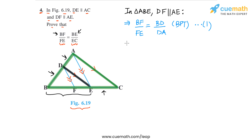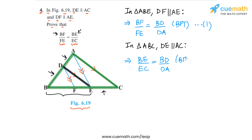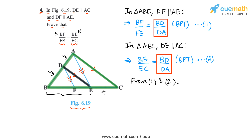In triangle ABC, DE is parallel to AC, so by the BPT, BE by EC is equal to BD by DA. Let's call this equation two. Comparing the RHS of equations one and two, both equal BD by DA, so the LHS must also be equal. Therefore, BF by FE is equal to BE by EC, which is what we had to prove.